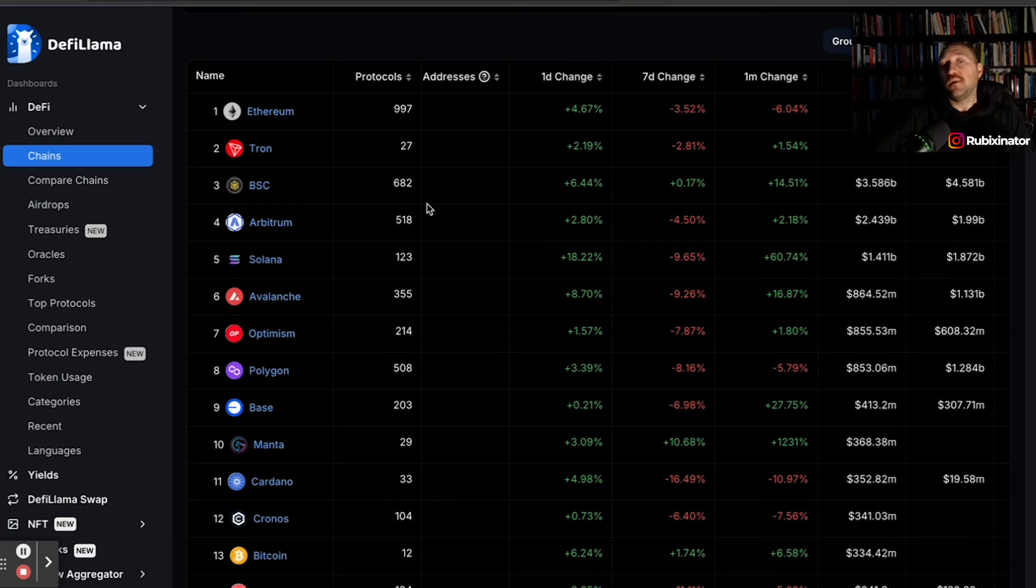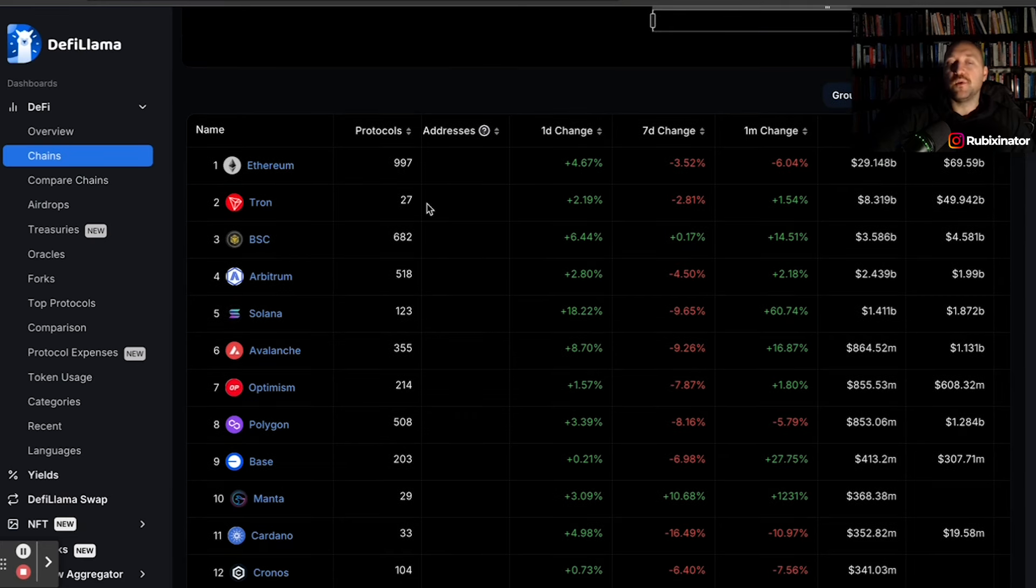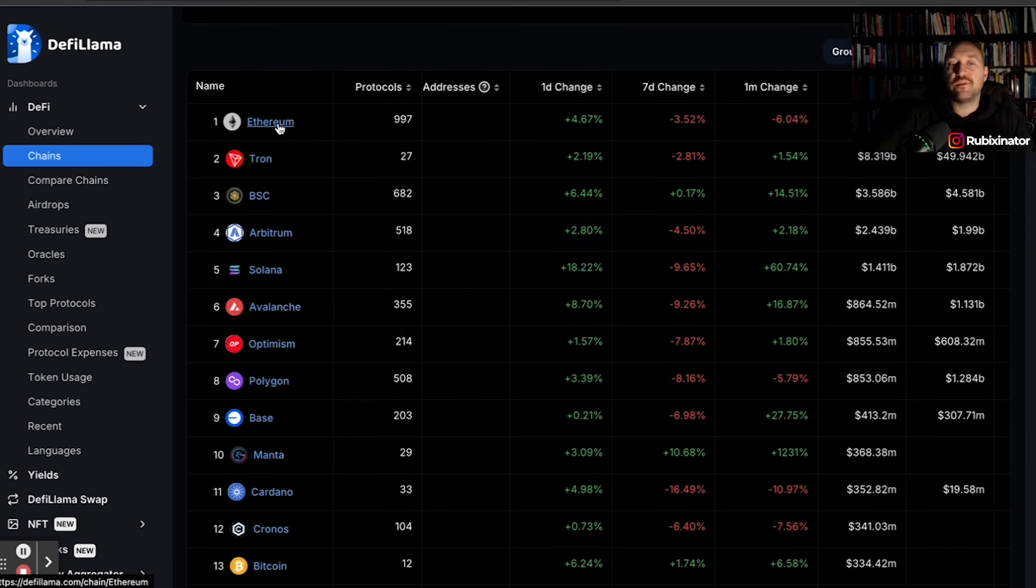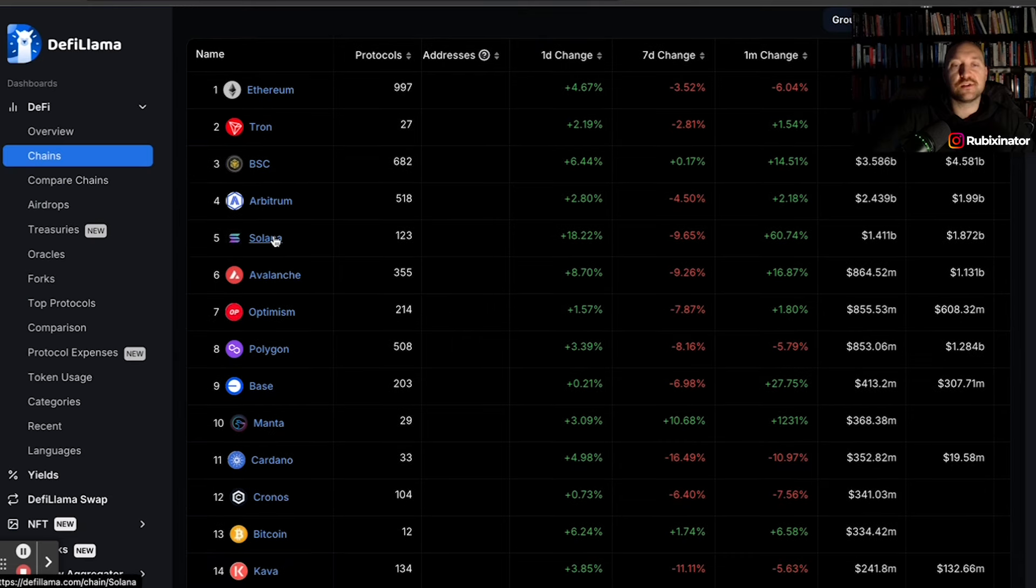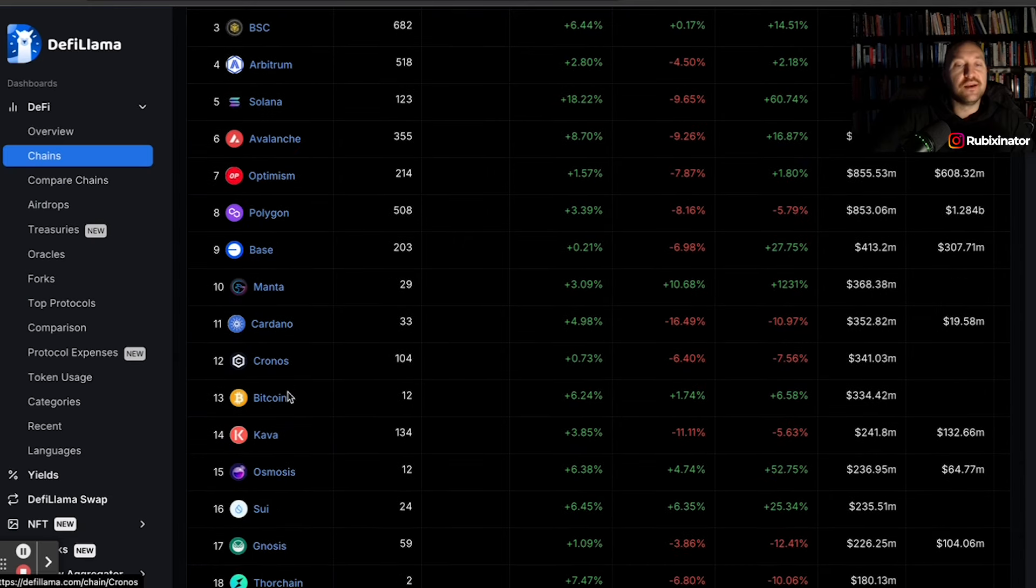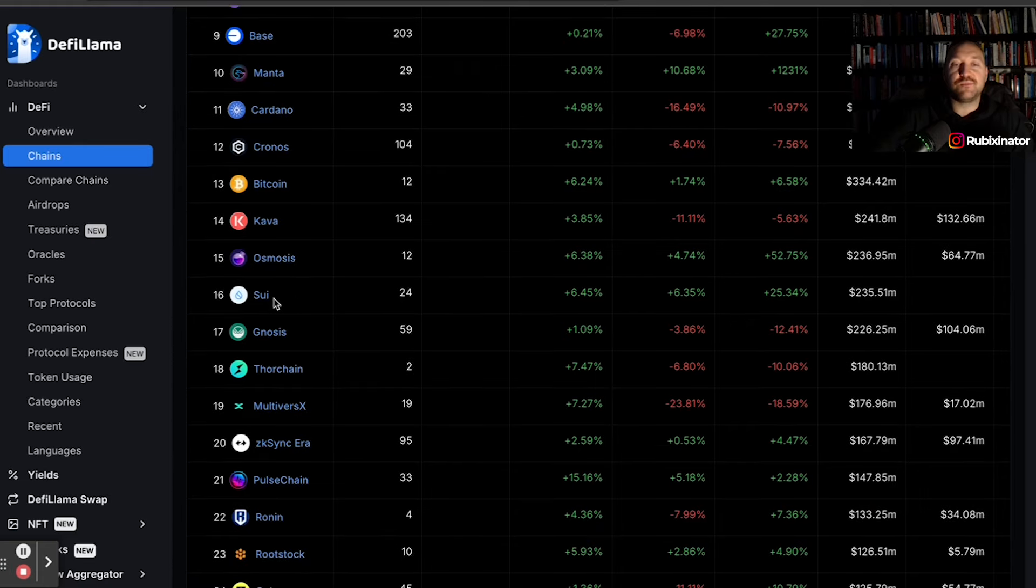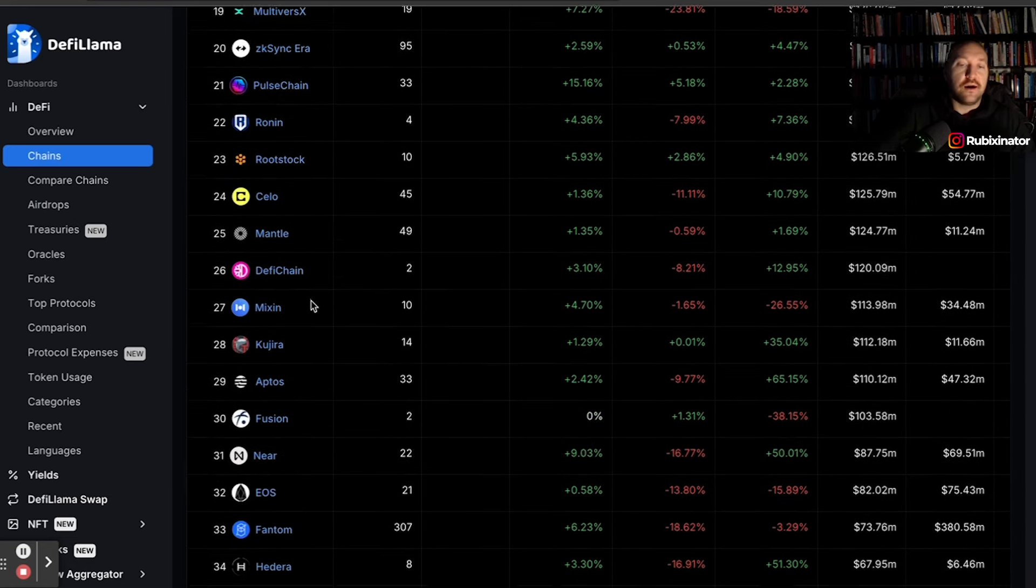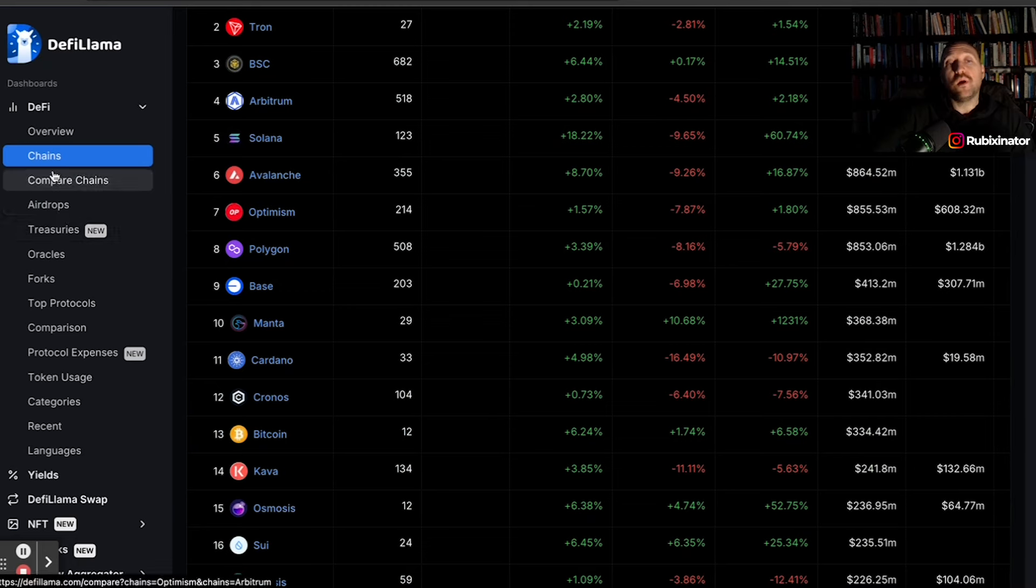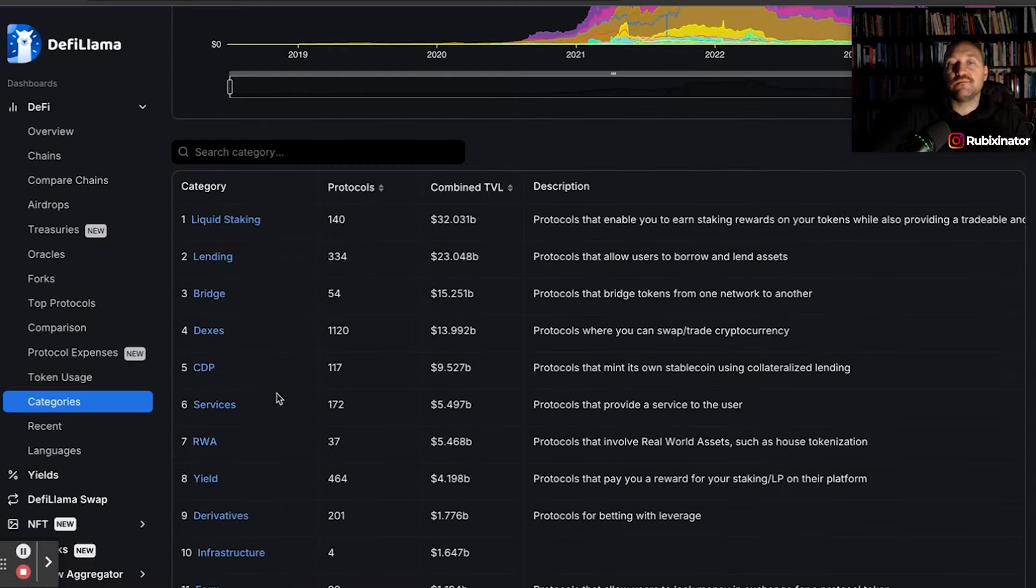The first thing we want to look at is DeFi Llama is a great tool. You're probably familiar with it. I can look at all the different chains from Ethereum to the Binance Smart Chain to Solana to AVAX to Base to Cardano, I can keep going, to Osmosis, Sui, which has been treating us very well. We're in a yield farm, and I just make more Sui. Now, what you want to do is go down to Categories, and you'll get a better understanding of what DeFi is.